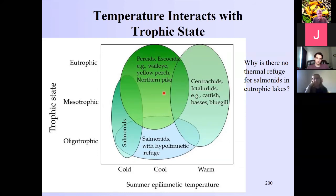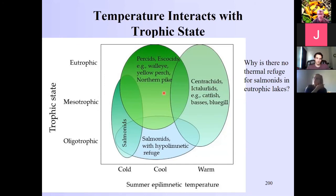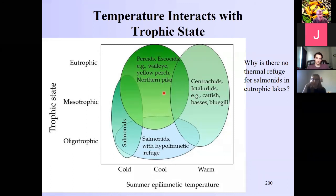This is a good example of how community structure is driven by multiple interacting factors. Eutrophication, which we've discussed repeatedly, cascades to affect even which fish species you find in a system. Combined with temperature effects, global climate change is sliding this whole pattern further north.